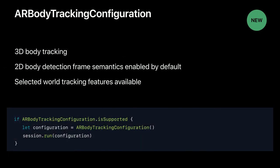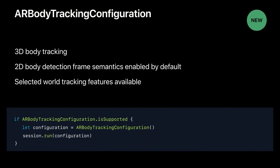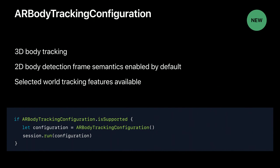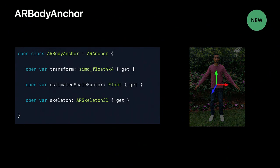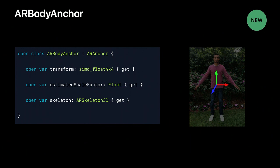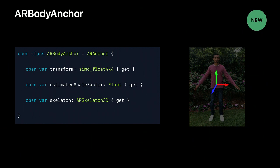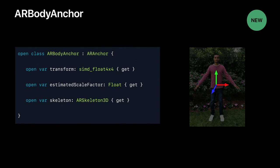To set it up you simply create the body tracking configuration and run it on your session — note that we also have API to check if that configuration is supported on the current device. When ARKit is running and detects a person, it will add a new type of anchor: ARBodyAnchor. This is provided in the session didAddAnchors callback just like any other anchor type. Like any anchor it has a transform providing position and orientation of the detected person in world coordinates. In addition, you get the scale factor and a reference to the 3D skeleton.